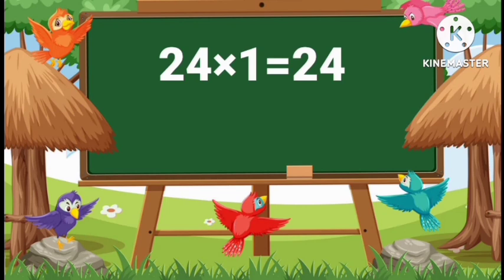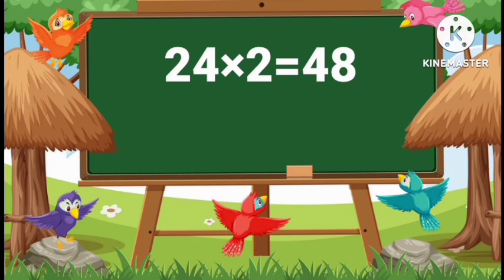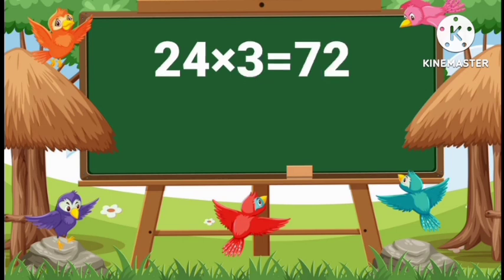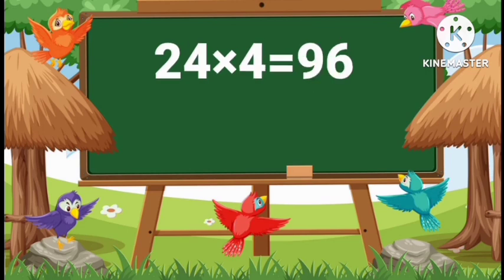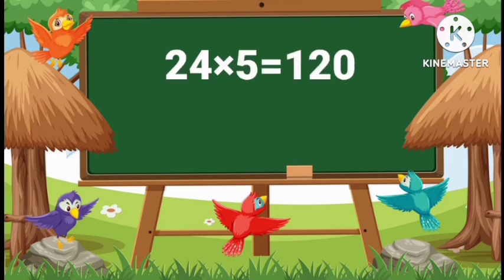24 ones are 24. 24 twos are 48. 24 threes are 72. 24 fours are 96. 24 fives are 120.